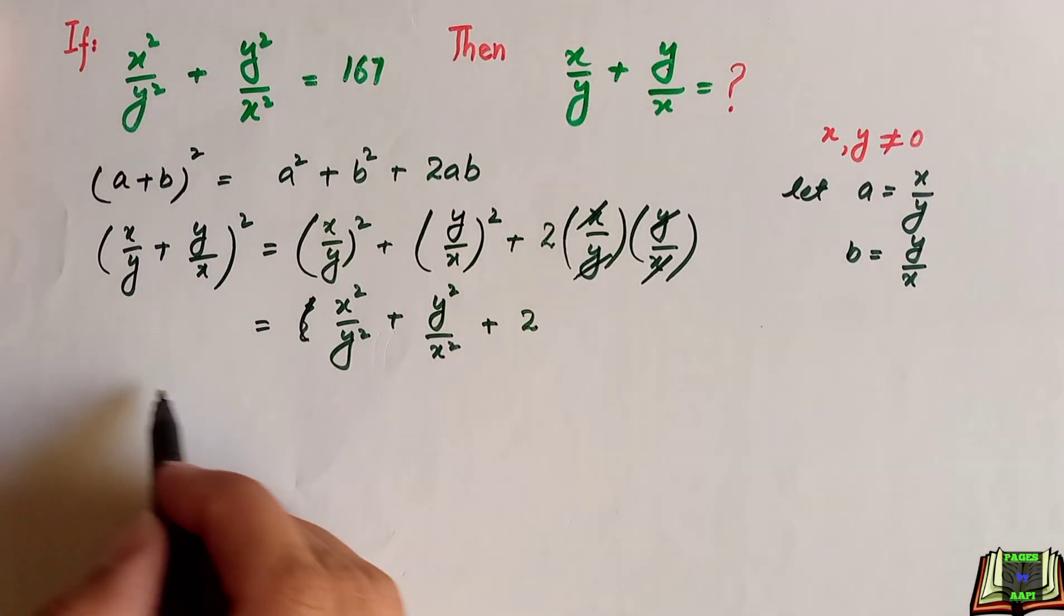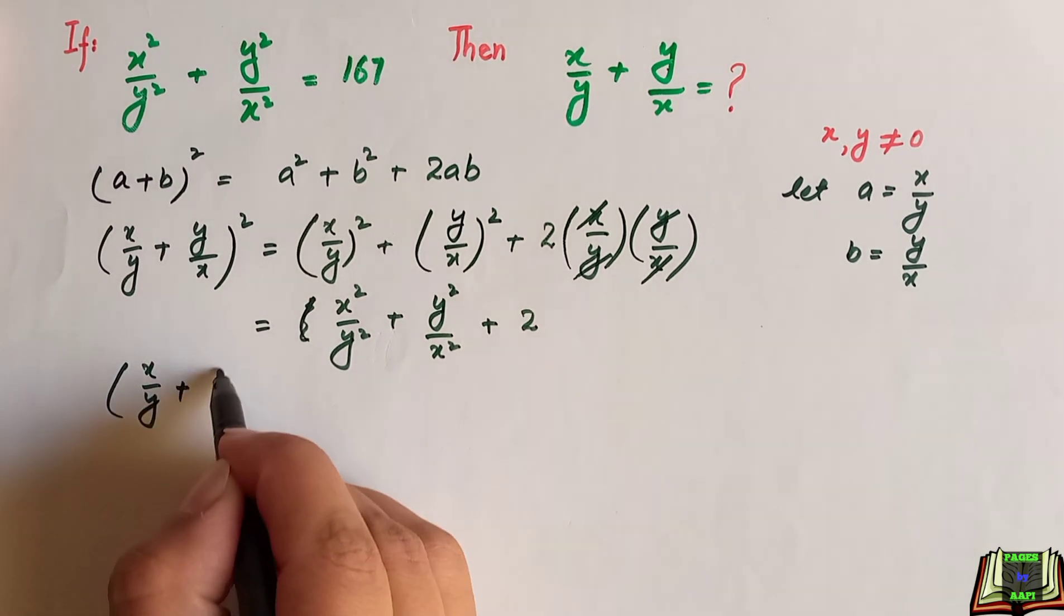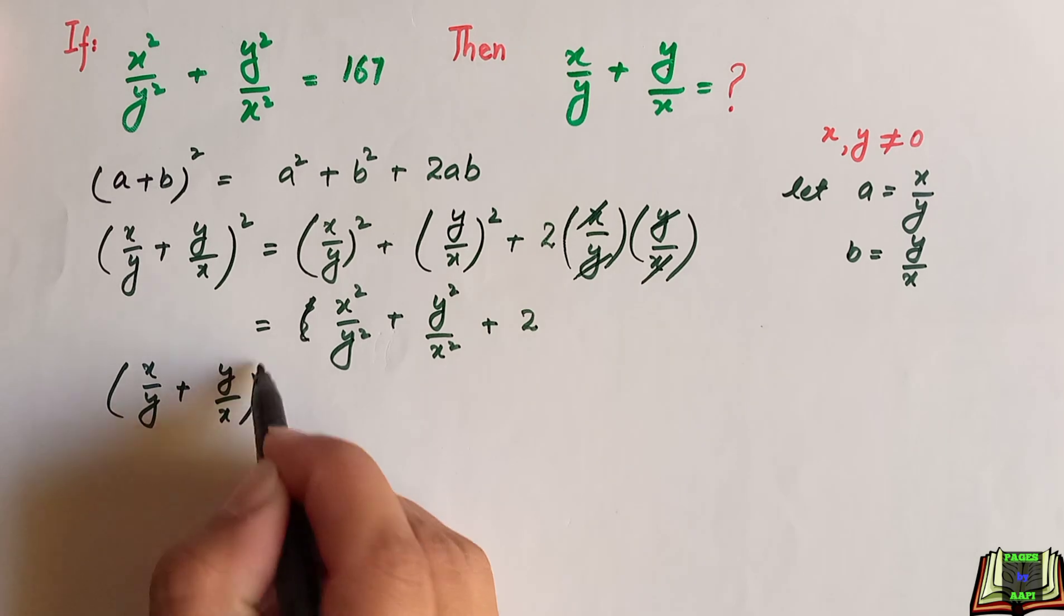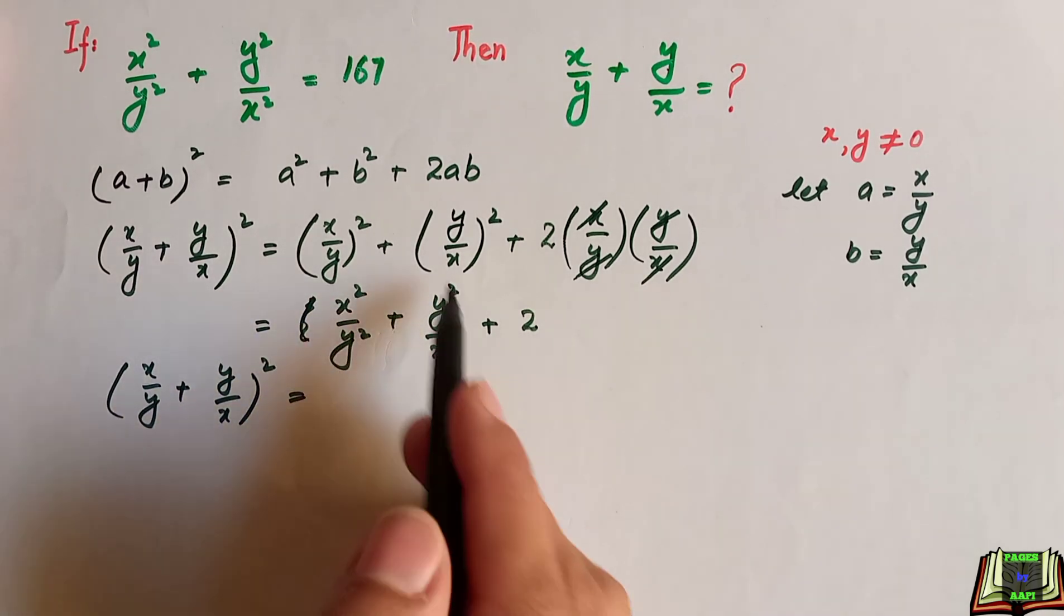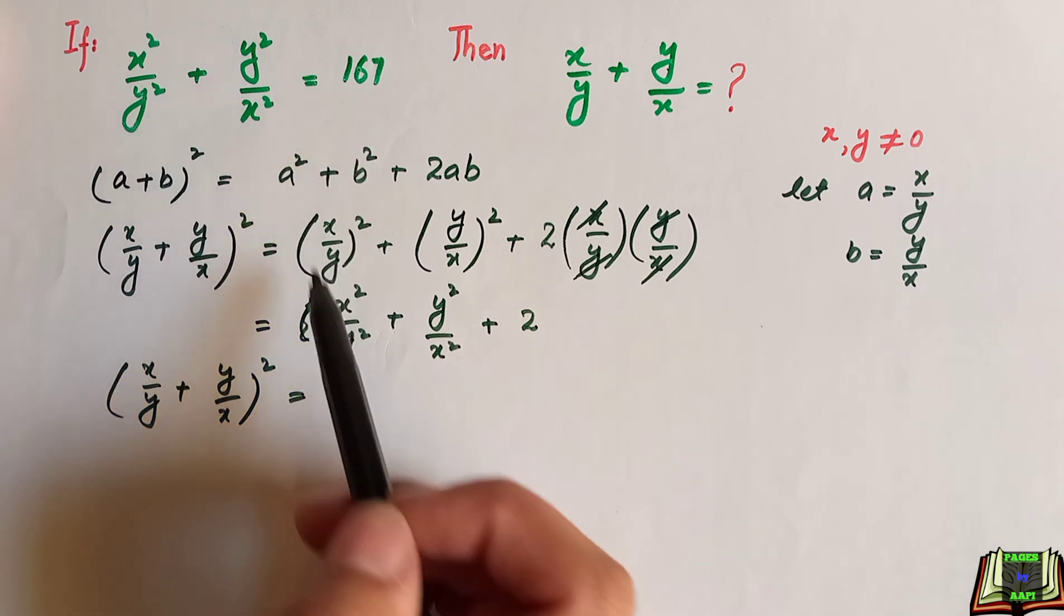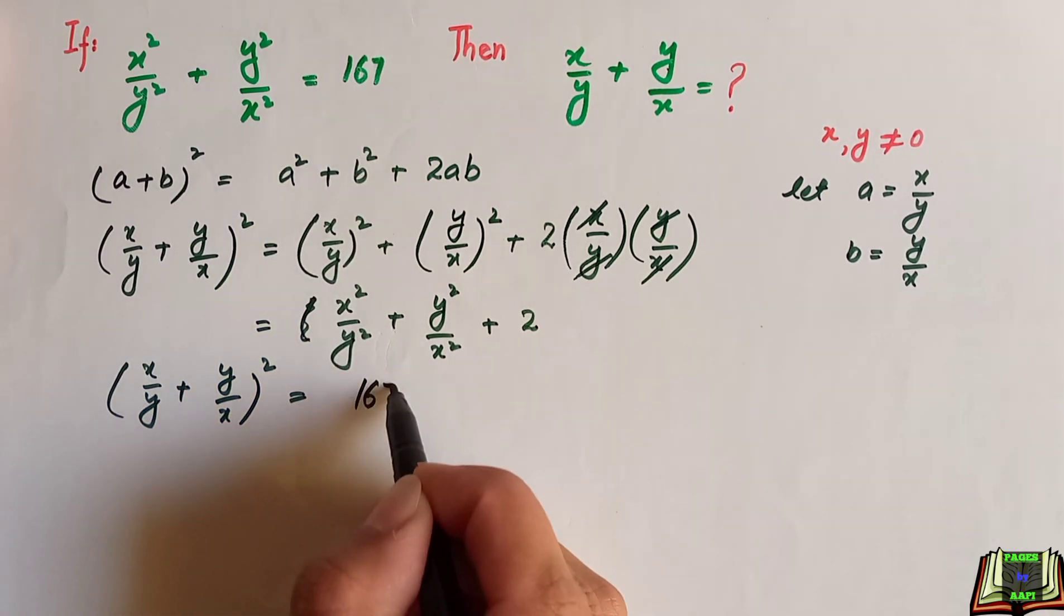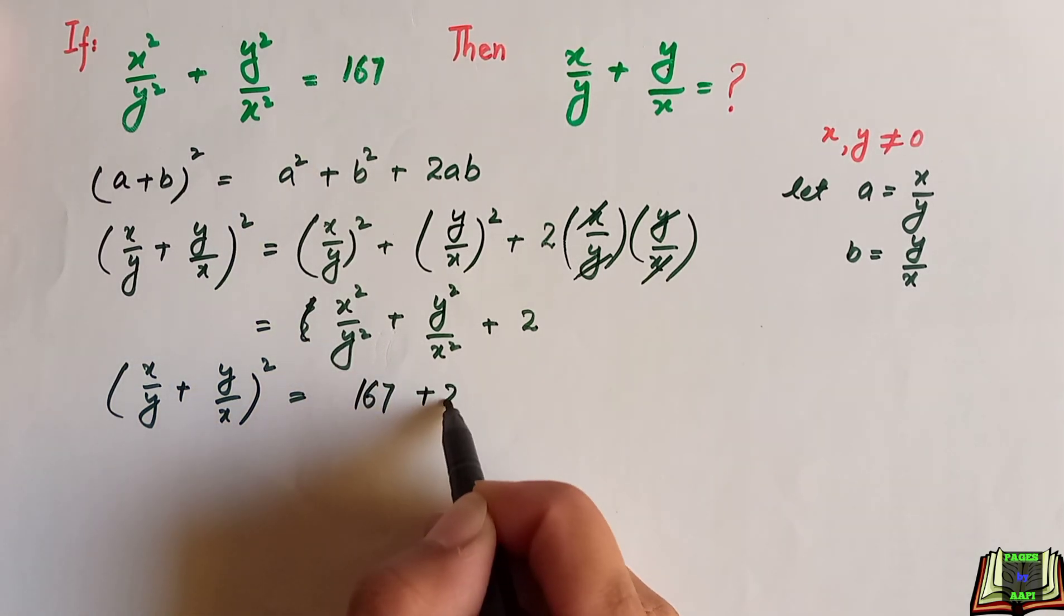Now in the next step, x divided by y plus y divided by x whole square is equal to... we know this is given is equal to 167. We are going to replace it with it plus 2.